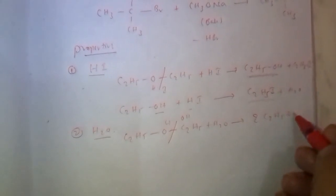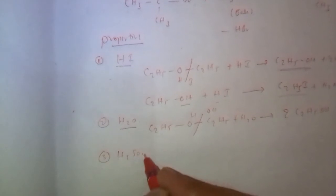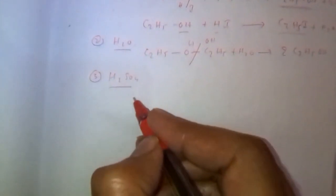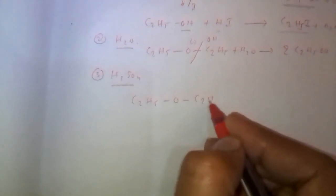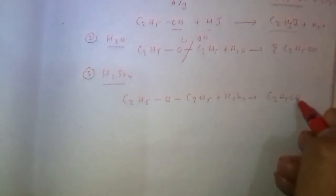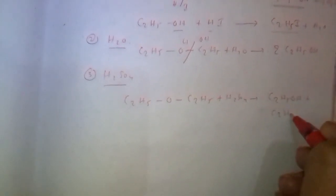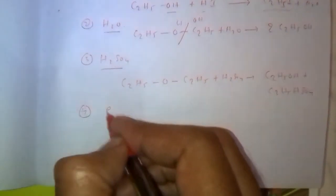Next, reaction with sulfuric acid. Alcohols are formed when reacted with sulfuric acid. It gives rise to C2H5OH plus ethyl hydrogen sulfate.